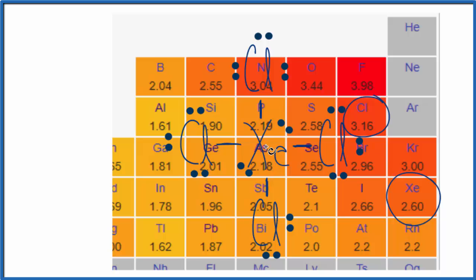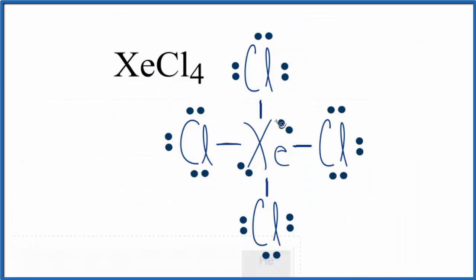The bond between the xenon and the chlorine, polar bond. Back to our Lewis structure. So, each of these bonds here between the xenon and the chlorine, those bonds are considered polar bonds, polar covalent bonds.